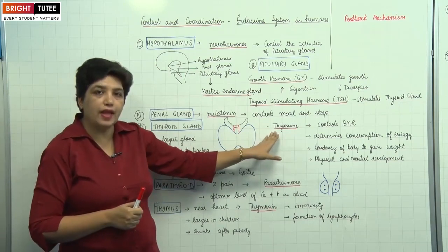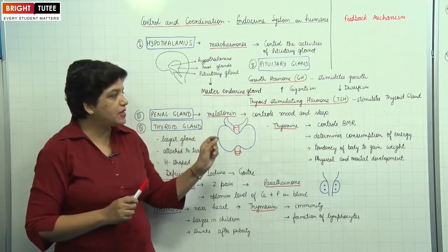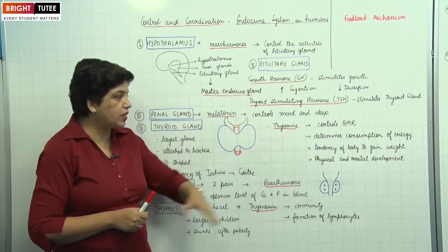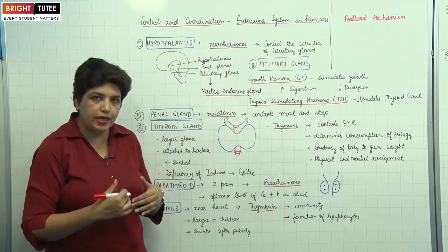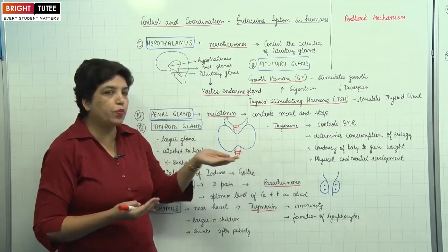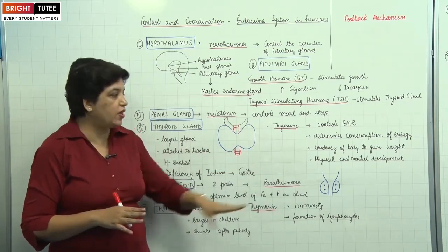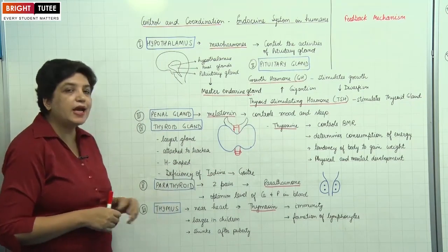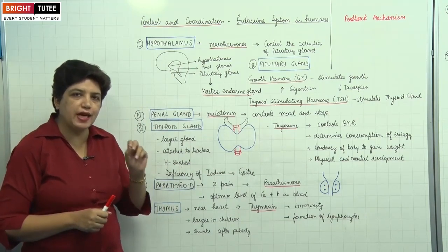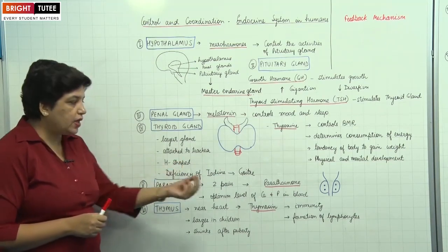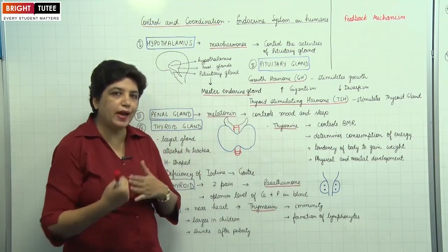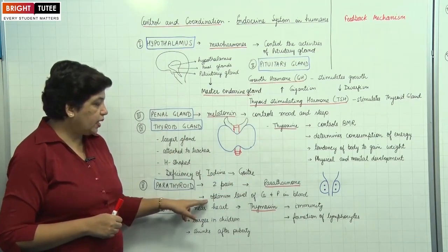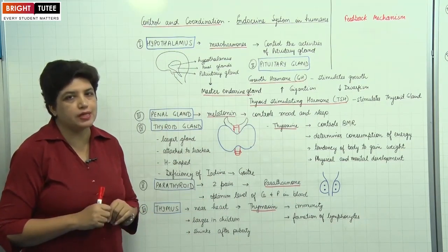The hormone released by the thyroid gland is thyroxine. It controls the basal metabolic rate (BMR) — at rest, your rate of metabolism is controlled by thyroxine. It determines the amount of energy consumption by the body, controls the tendency to gain weight, and plays an important role in physical and mental development. The next gland is the parathyroid — two pairs of very tiny yellow-coloured glands embedded in the posterior side of the thyroid gland. They secrete parathormone, which controls the optimum level of calcium and phosphorus in the blood.